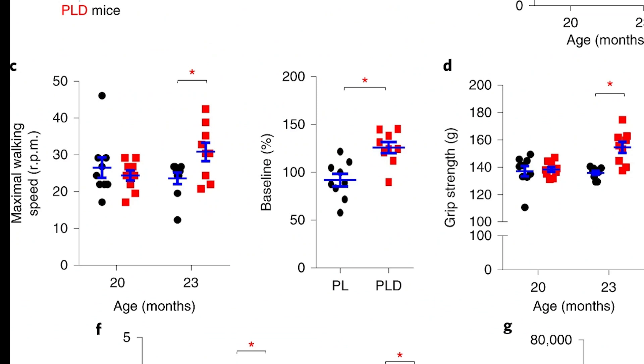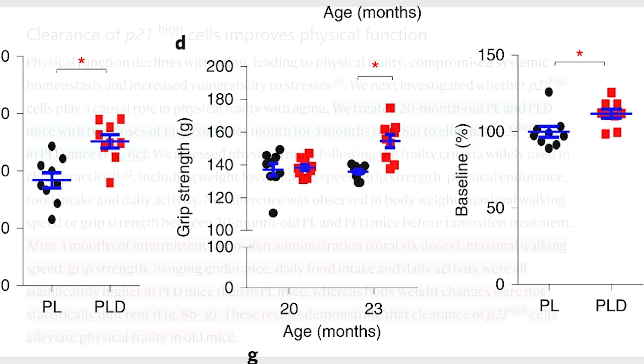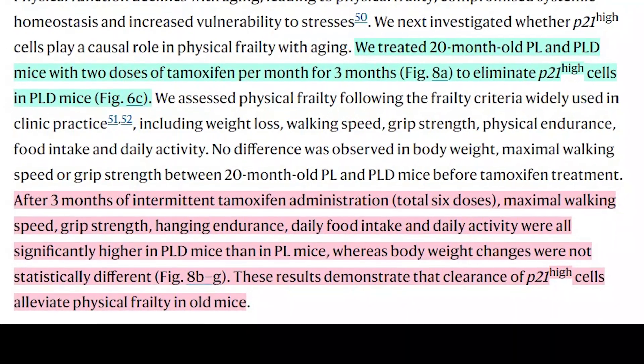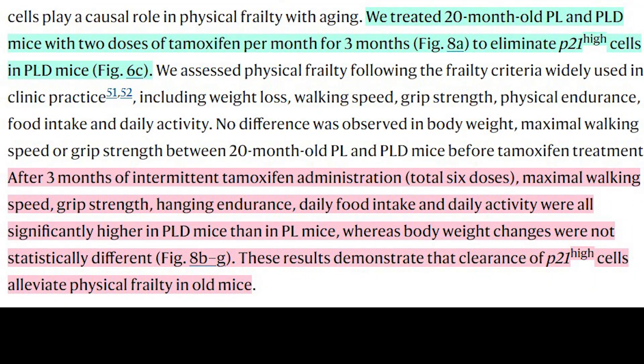So as you can see here, compared to controls, the mice seem to show improvements in physical function after the three-month treatment. For example, they saw improvements in maximal walking speed, grip strength, hanging endurance, and also increases in the daily food intake and daily activity. So the author suggested that this demonstrated that the clearance of these P21 high cells alleviated physical frailty in old mice.